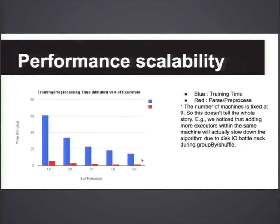One thing we noticed is that the number of machines is fixed at nine. As we increased the number of executors, we had a lot more executors running on the same machine, and the shuffle performance became progressively worse. I think it's because shuffle is somewhat bound by disk IO. In theory, if we had more machines, it could be a little more linear in performance scalability.